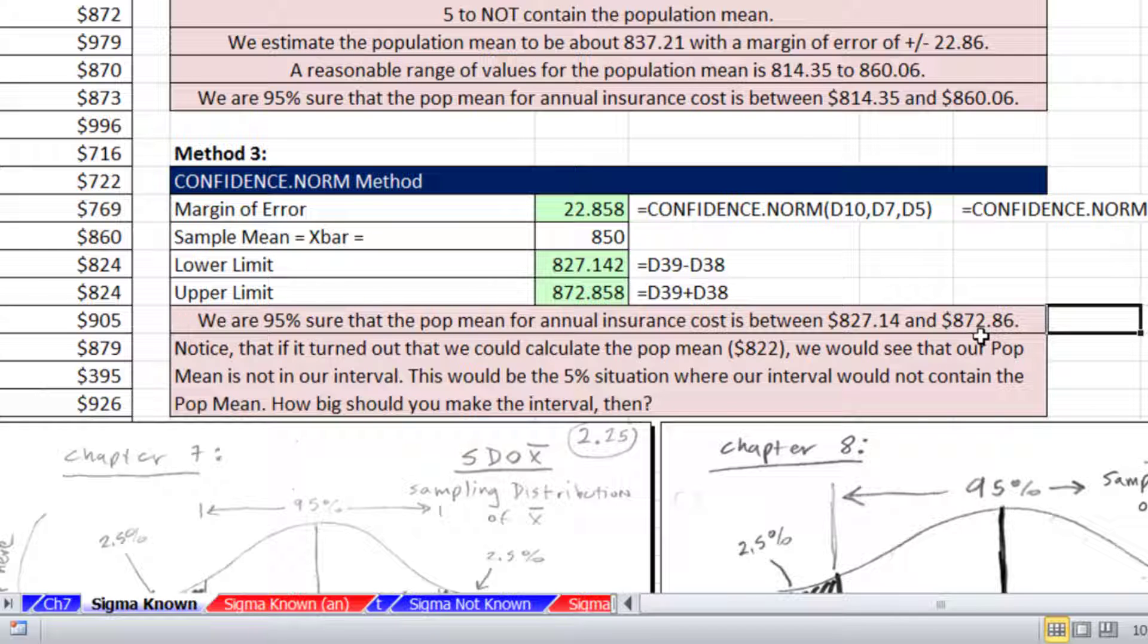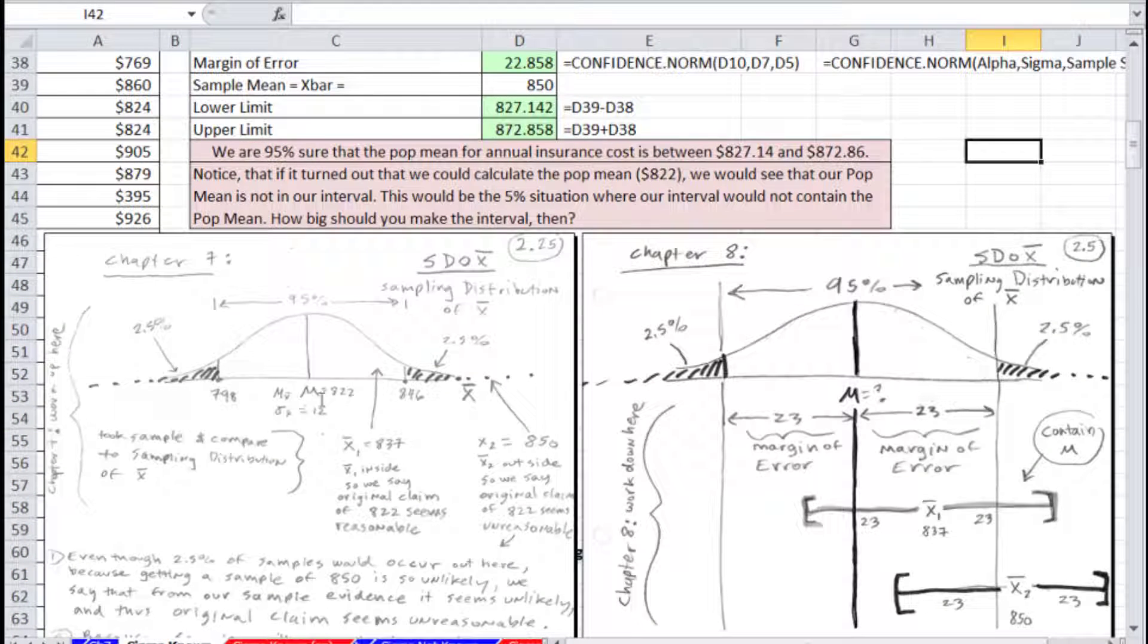We wouldn't know that this hits the 5% case here. But if we did that 822, we can see it's not in this interval. So we wouldn't know this, because we're dealing with sample data. We don't know the population mean. But occasionally, you're going to get an interval, and it's going to be one of those ones that doesn't have it.